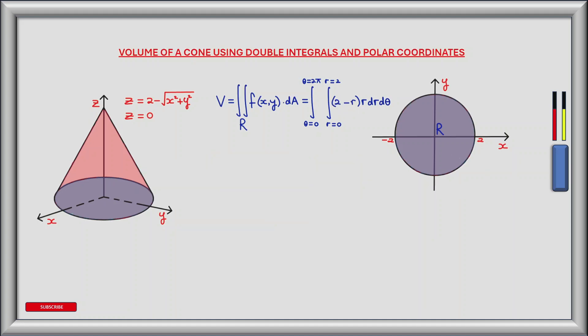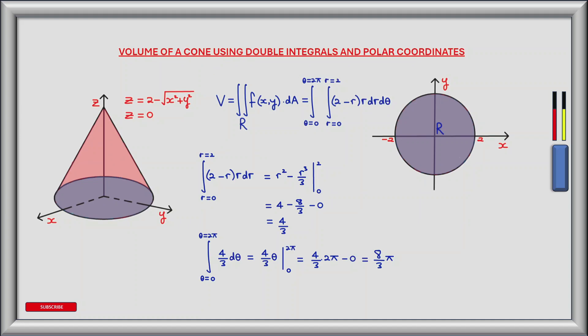So now we have our full double integral. The inner integral goes from r equals 0 to r equals 2, integrating (2 minus r) times r dr dθ, and the outer integral goes from θ equals 0 to θ equals 2π. Starting with the inner integral, we integrate (2 minus r) times r dr between r equals 0 and r equals 2. The antiderivative of (2 minus r)r is r² minus r³/3, evaluated between 0 and 2.